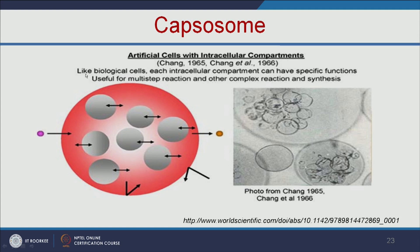Let us see the capsulome more closely. It is like a biological cell — each intracellular compartment can have specific functions, such as functioning like a nucleus, mitochondria, or lysosome. All the small capsules are encapsulated into a big lipid-based carrier, called a capsulome, which can mimic a biological cell.